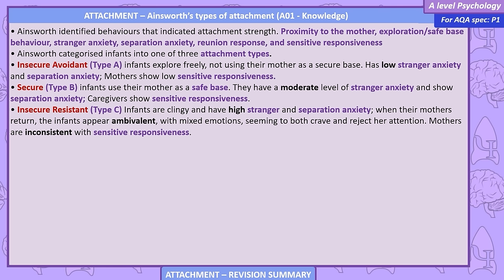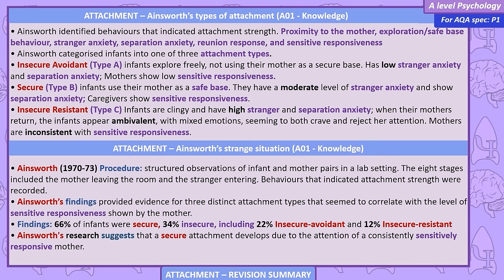Type B — secure: infants use their mother as a safe base, with a moderate level of stranger anxiety and separation anxiety. Caregivers show sensitive responsiveness. Type C — insecure resistant: infants are clingy with high stranger and separation anxiety. When their mothers return, infants appear ambivalent — seeming to both crave and reject her attention. Mothers are inconsistent with sensitive responsiveness. Ainsworth's Strange Situation (1970, 1973): a structured observation of infant and mother pairs in a lab setting. The eight stages included the mother leaving the room and a stranger entering. Findings: 66% secure, 22% insecure avoidant, 12% insecure resistant.